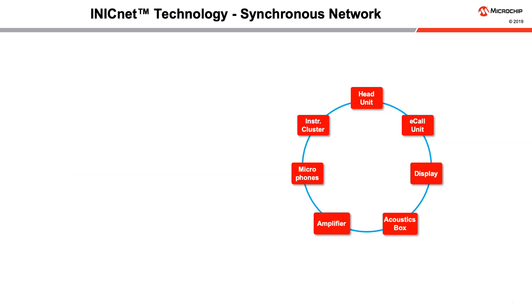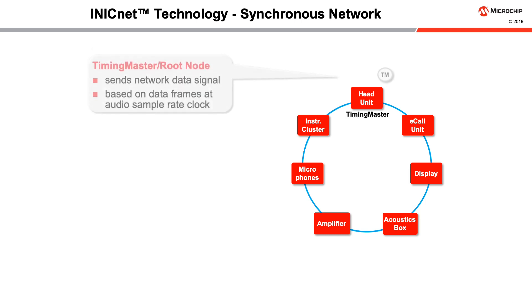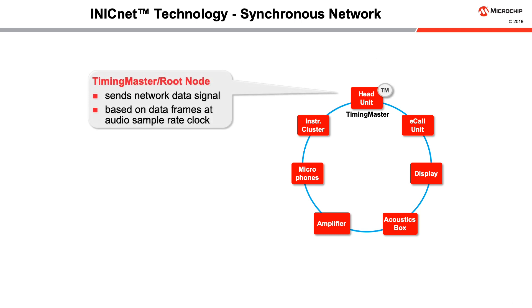iNICnet is a synchronous network where a common clock is distributed between the nodes of a system. In addition, the network is capable of tunneling other clocks, which can be useful in applications such as driver assist where operating cameras from a common clock is beneficial. The clock synchronization of all devices in the network is accomplished as follows: a dedicated timing master device sends out network data in continuous data frames at a rate of 48 kilohertz, which is identical to the audio sampling rate. The result is a continuous bitstream running through the network, providing a stable clock signal for the entire network.